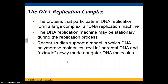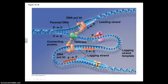The proteins that participate in DNA replication form a large complex referred to as a DNA replication machine. It may be stationary during the replication process. Recent studies support a model in which the DNA polymerase molecules reel in parental DNA and extrude, or push out, newly made daughter DNA molecules — meaning these enzymes stay in place and the DNA molecules are unzipped and pushed through the enzymes, rather than the enzymes moving along the DNA.